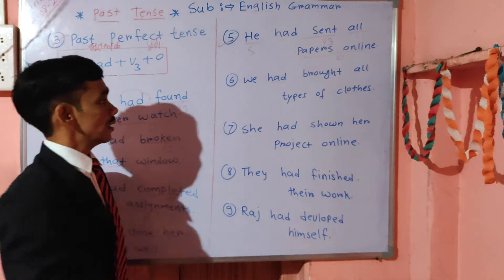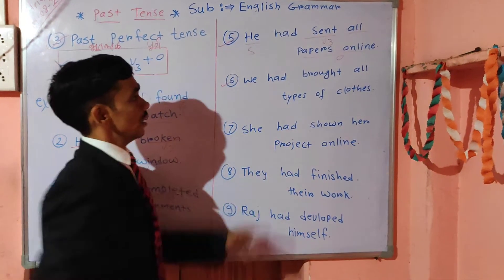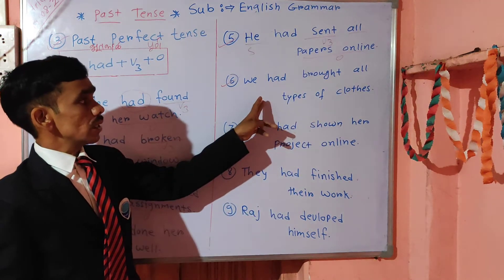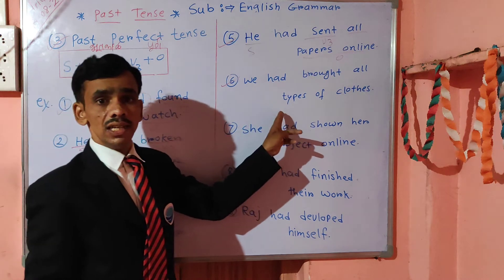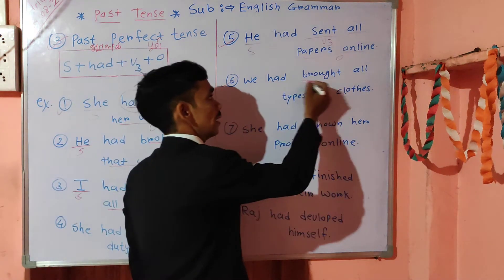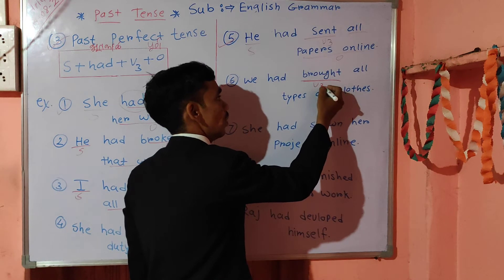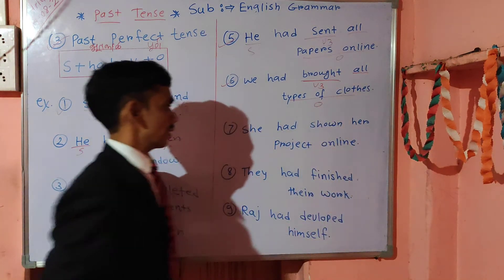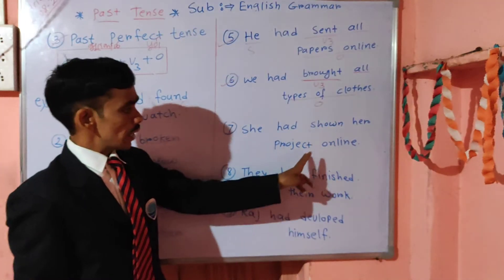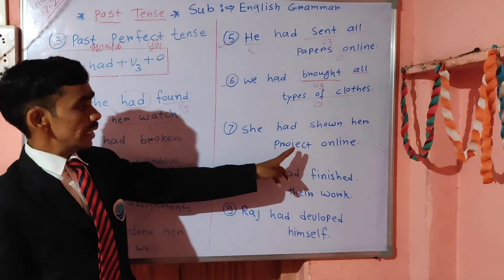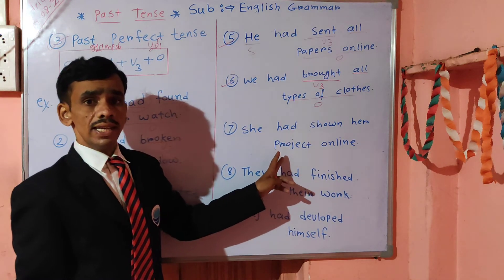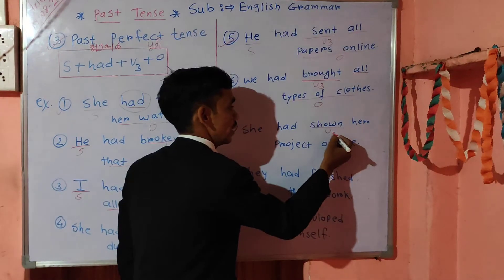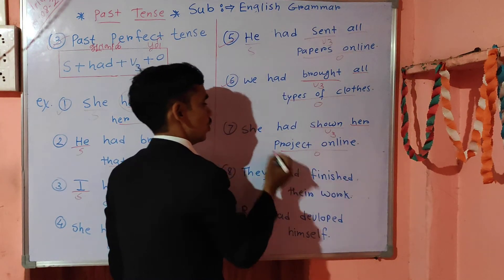He is the subject here. Then next example: We have brought all types of clothes. Bring is the first form and brought is V3. All types of clothes is the object here. She had shown her project online. Tyanetanshi project online dhakmila hota. Shown is V3 here and her project online is the object.